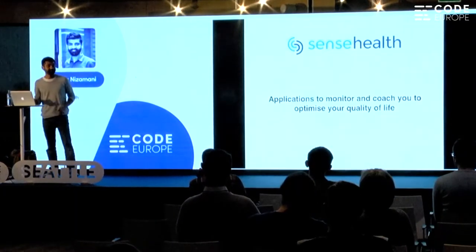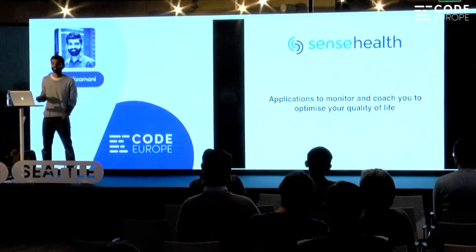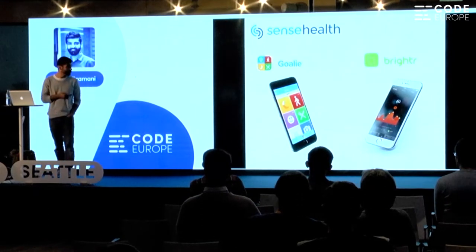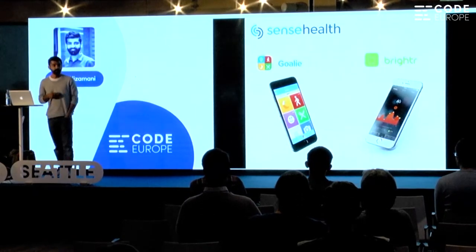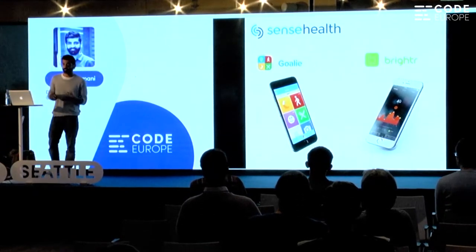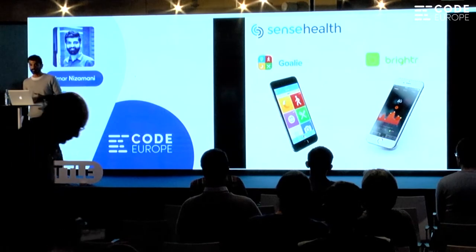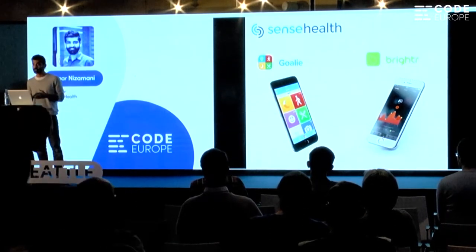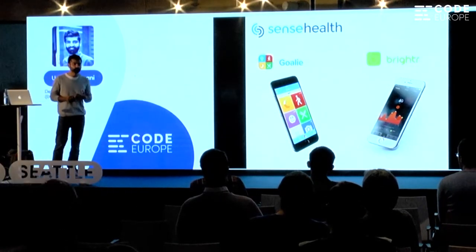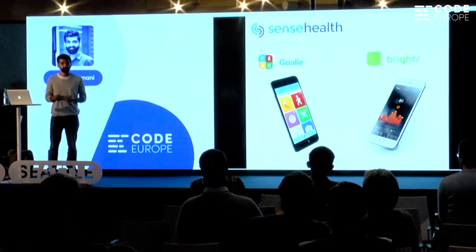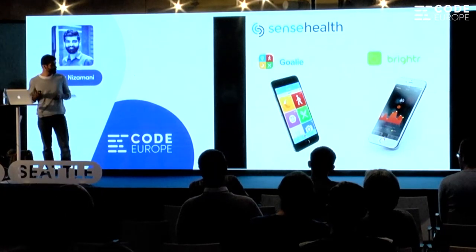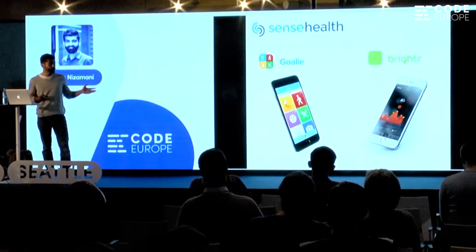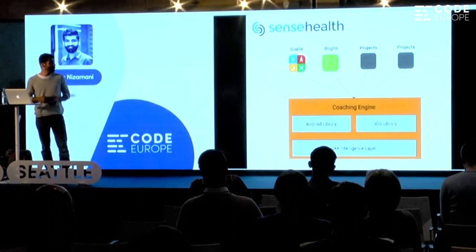These kinds of applications are primarily used by our two key products: Goalie and Brighter. Both of these applications are about measuring yourself. Brighter is mainly focused on quantified self, and also how to change people's behaviors and habits. The key product I'm going to talk about today is Goalie, because this was what I was involved with.